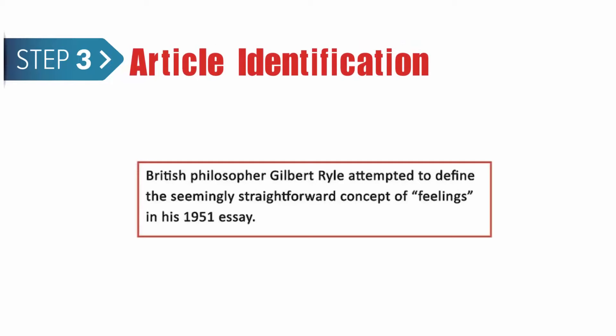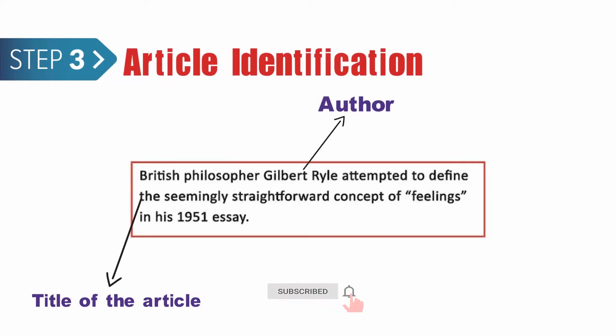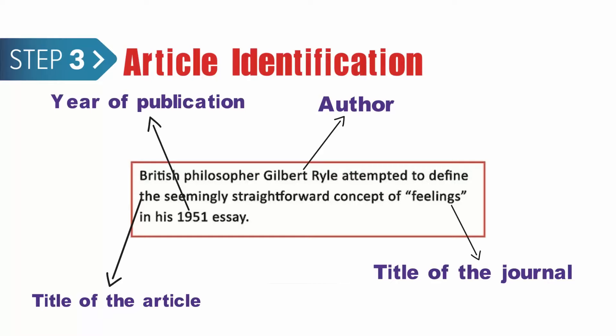Step 3: Article identification. After your citation, you need to include the identification of your reviewed article: title of the article, author, title of the journal, and year of publication. All of this information should be included in the first paragraph of your paper.